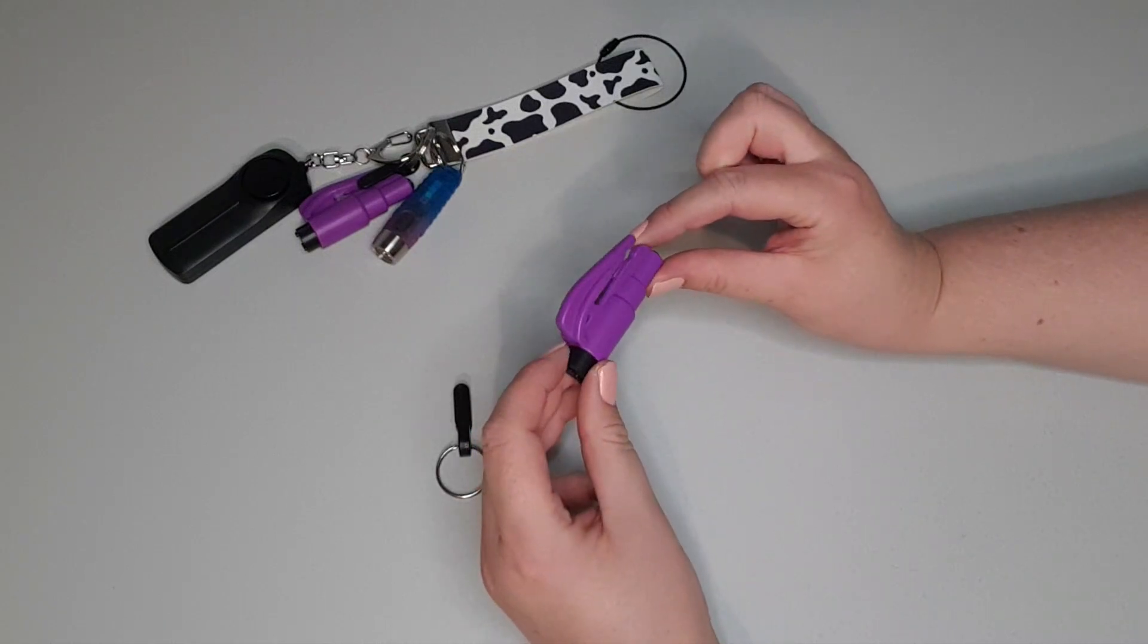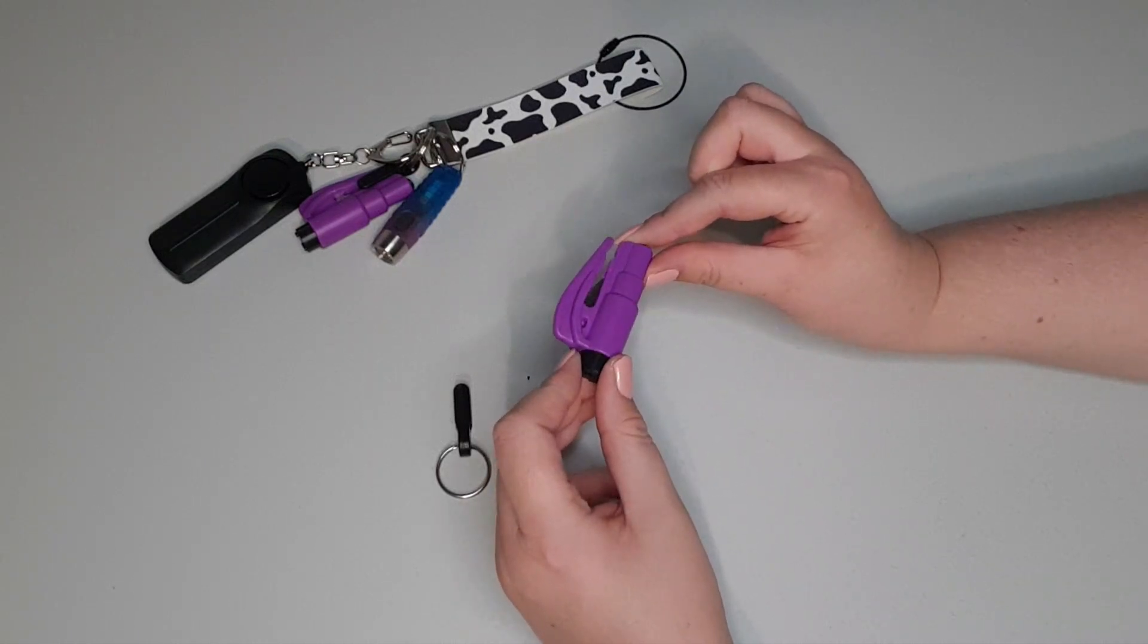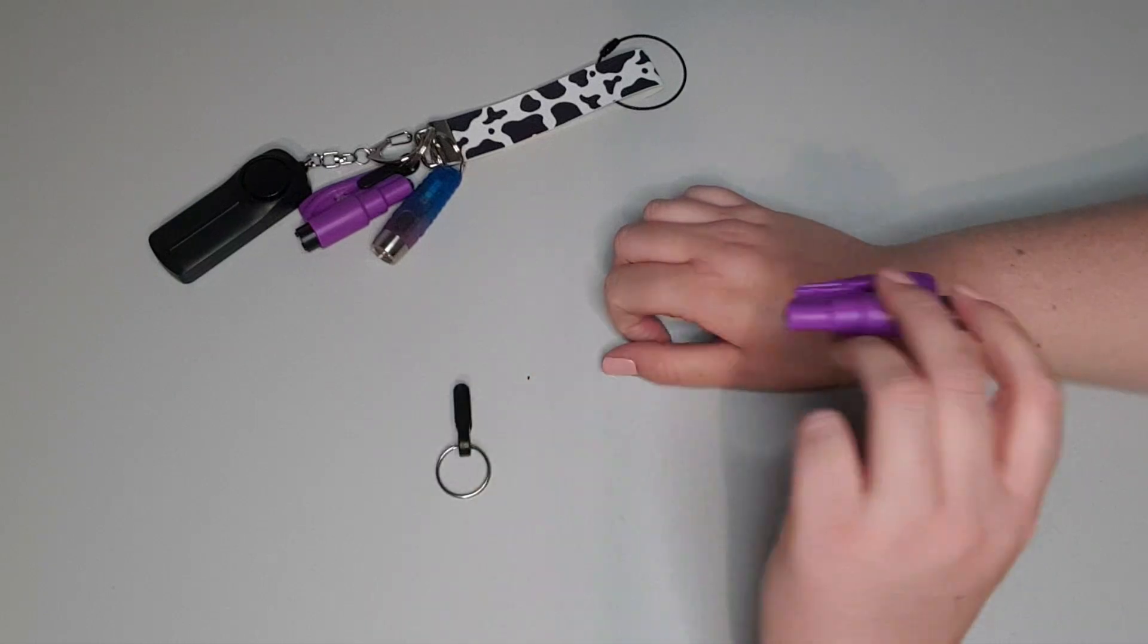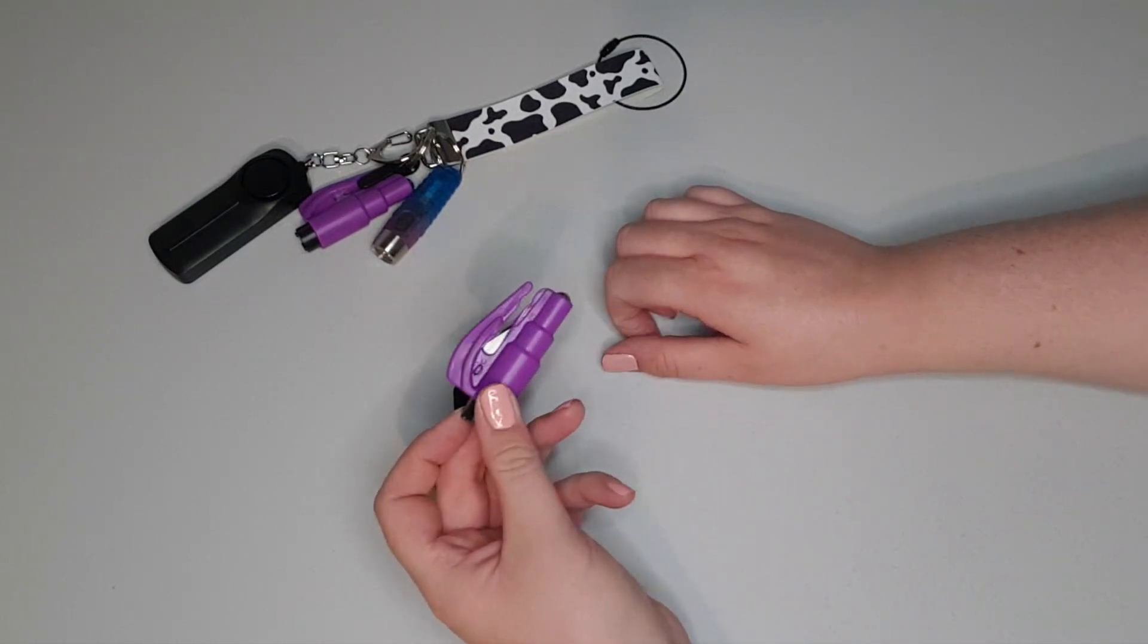This is a really good tool to have if you have child seats in the back and you can't get them out for whatever reason in an emergency. You just slice it there, there, and there, and then you can get your child out really fast.